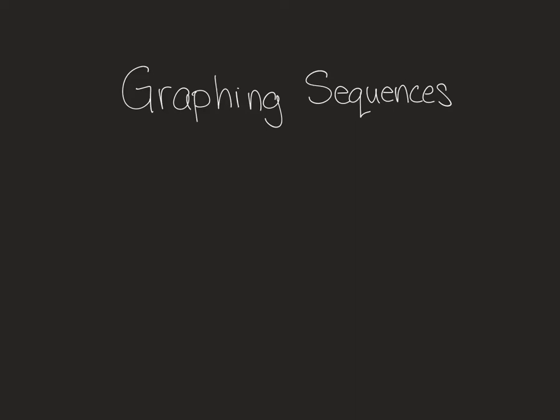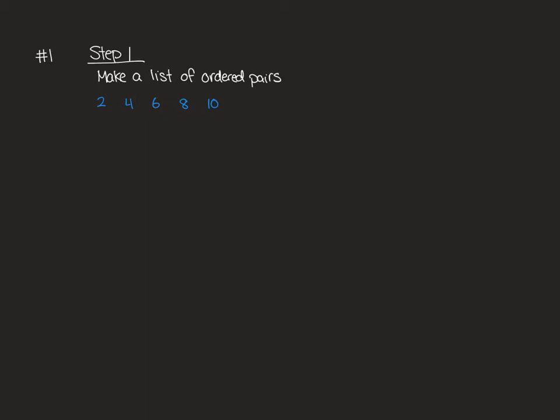Today's lesson is on graphing sequences, taking the ordered pairs that we've been learning about for the last couple days and turning them into a graph. Question one is going to give you a sequence and ask you to turn it into a graph. The first step is to make a list of ordered pairs out of your sequence.